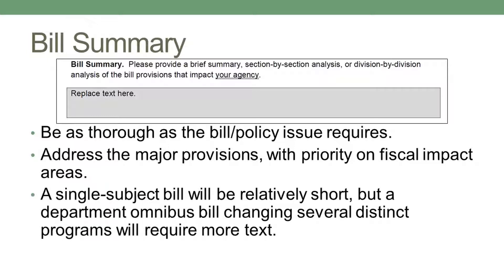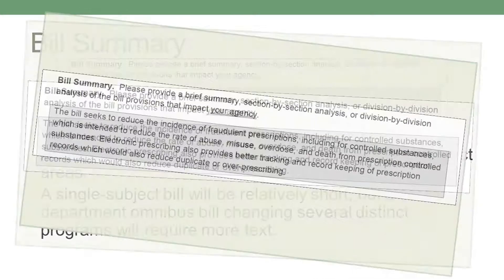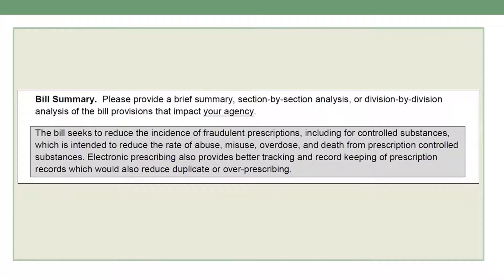Conceptually, a single subject bill would be a relatively short summary, but a larger omnibus bill changing several different programs would require more text. In this example, the Board of Pharmacy summarized Senate Study Bill 3074, which was a three-section bill, in two sentences, so you can be concise.